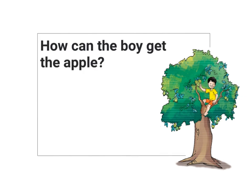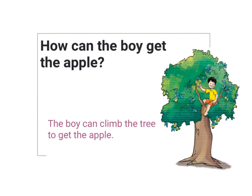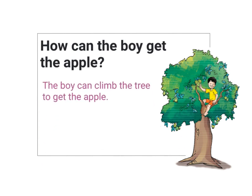The next question is: how can the boy get the apple? To answer this question, I will think of all the different ways the boy could get the apple. The boy could jump and get the apple, but it would be too high for him. The boy could also climb the tree and get the apple. So I will write: the boy can climb the tree to get the apple.